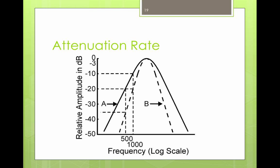So B is steeper. B is more narrowly tuned than curve A. Curve A is more broadly tuned filter than curve B. Curve B has a steeper rejection rate, or roll-off rate, or attenuation rate.